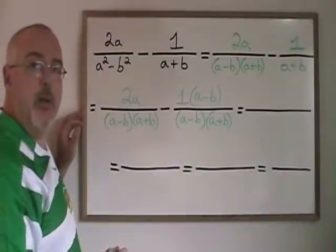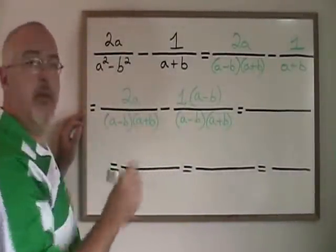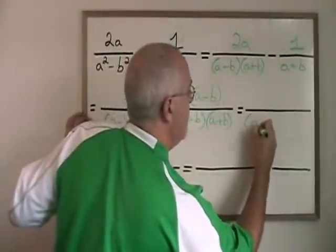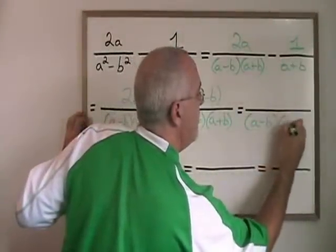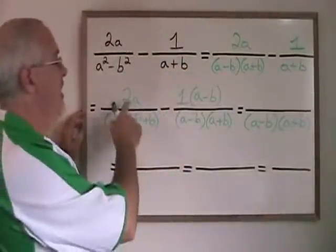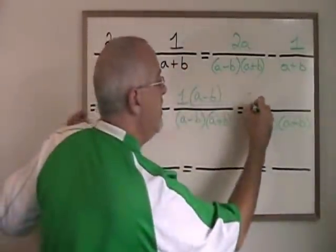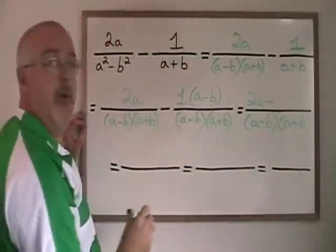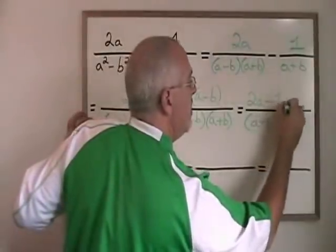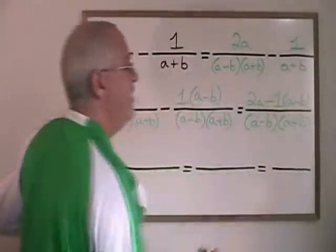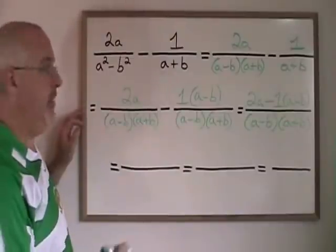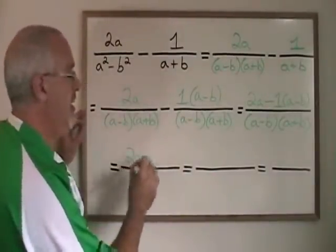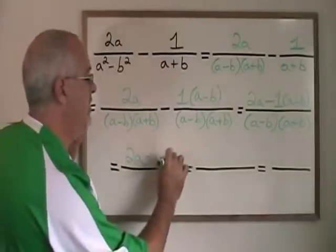Now we can combine our numerators all together into one fraction over the common denominator. 2a minus 1 times a minus b. This simplifies to 2a minus a plus b.